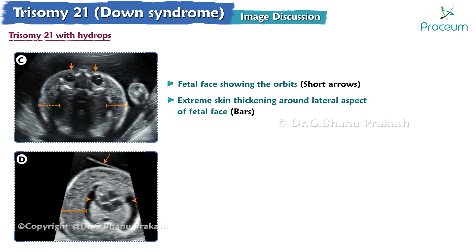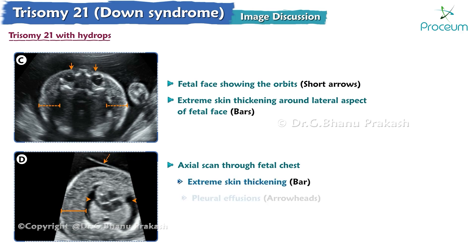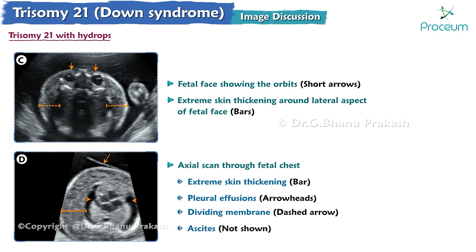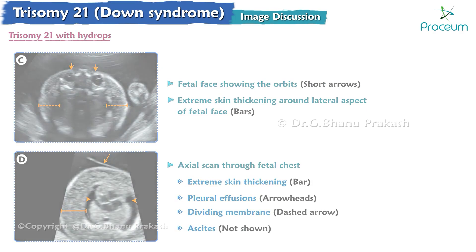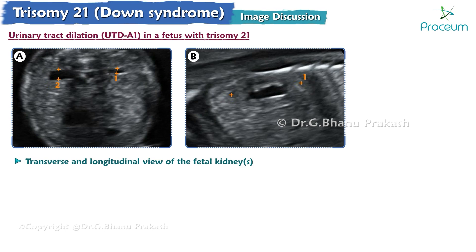Image D is an axial scan through the fetal chest showing extreme skin thickening and pleural effusions with a dividing membrane. This fetus also has ascites. Additionally, there is an image showing a transverse and longitudinal view of the fetal kidneys demonstrating unilateral urinary tract dilation at 20 weeks in a fetus with Trisomy 21.